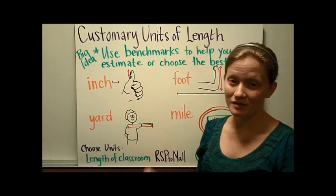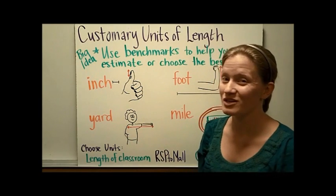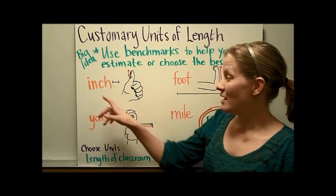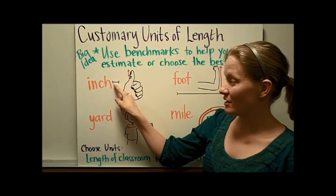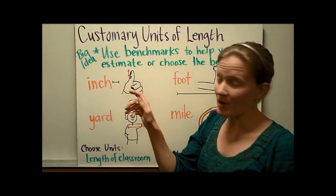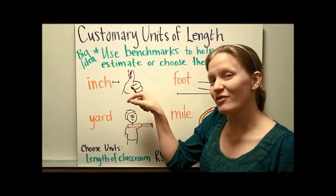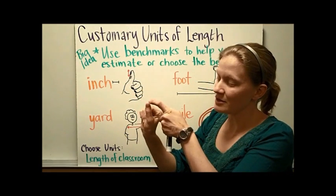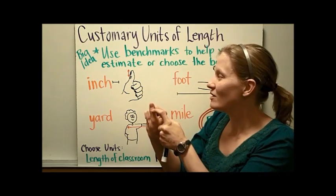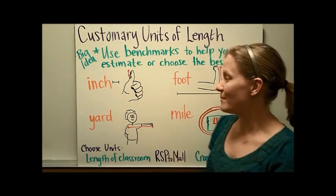We have four customary units to know, so let's talk about the benchmarks for each one that you can use anytime you need to estimate. An inch — I've drawn exactly an inch here with this black line, but on your own body, some part of your thumb is an inch. For me, an inch is from the very tip of my finger to my first knuckle. You might want to measure it to see where an inch falls on your thumb.